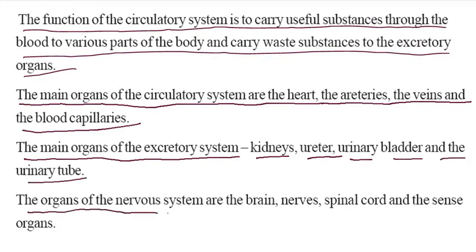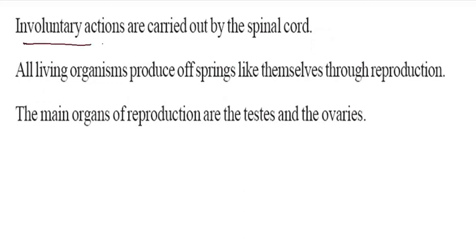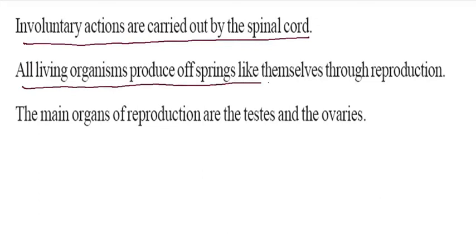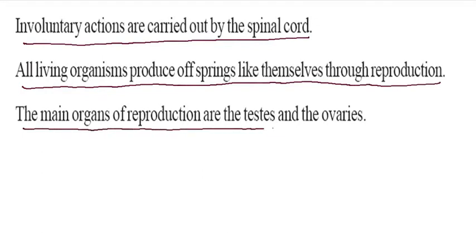The organs of the nervous system are the brain, nerves, spinal cord, and the sense organs. Involuntary actions are carried out by the spinal cord. All living organisms produce young ones that look like themselves — this is reproduction. The main organs of reproduction are the testes and the ovules.